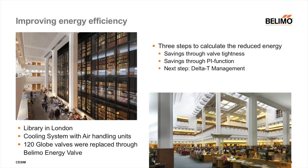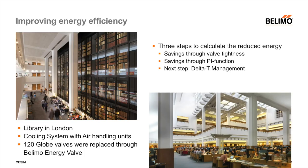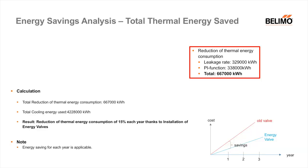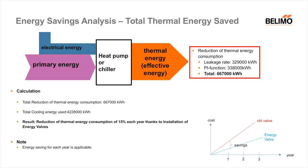We demonstrated the improvement of energy efficiency in a practical project in the UK. The building is a very large library with 120 air handling units and old globe valves. These 120 globe valves were replaced by 120 energy valves and we calculated the resulting energy savings. Thanks to the installation of the energy valve, annual savings in thermal energy were achieved through a better leakage rate and pressure-independent flow control. These total savings were about 15% every year in thermal energy, reducing thermal energy consumption by a total of 667,000 kWh.